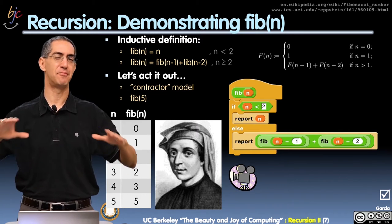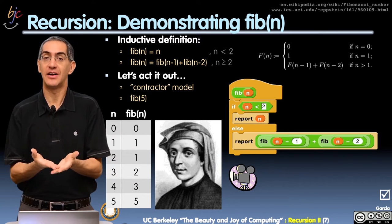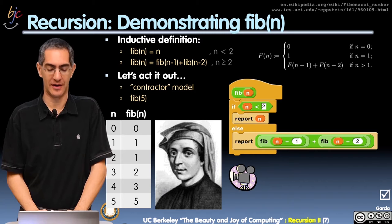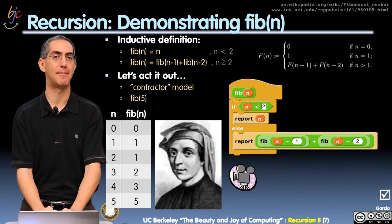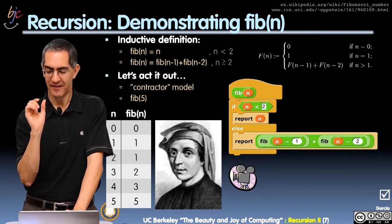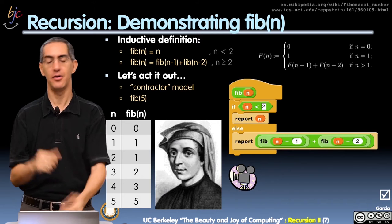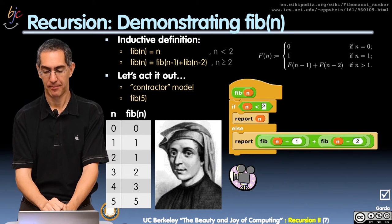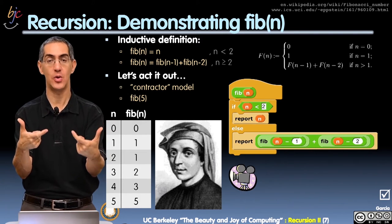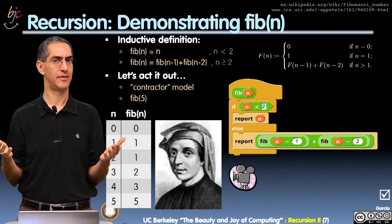Fibonacci is a classic computer science problem, it's a classic mathematics problem. Fibonacci was a mathematician who wanted to figure out the rate of growth of rabbits. He looked at it and realized that rabbits grow in this interesting way — if you have the number of rabbits on a certain day, on day zero you got zero, on day one you got one rabbit. After that, on day n, you have however many you had yesterday and however many you had two days ago. Add those together, that's how many you have on day n.